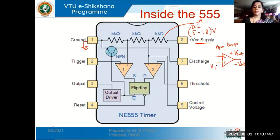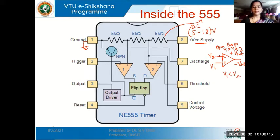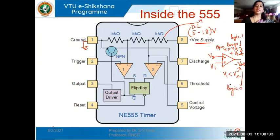Whenever the voltage at the non-inverting terminal is greater than the voltage at the inverting terminal, the output is at positive saturation (logic 1). Whenever the non-inverting terminal voltage is less than the inverting terminal voltage, the output is at negative saturation (logic 0). We can control the output levels by choosing appropriate power supplies for these op-amp comparators.